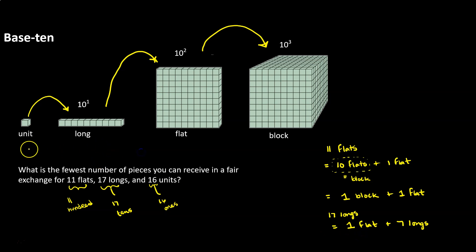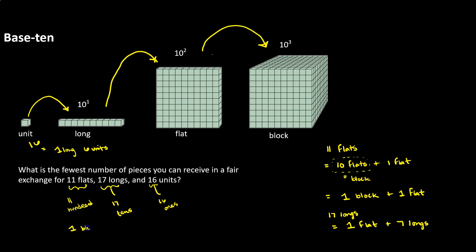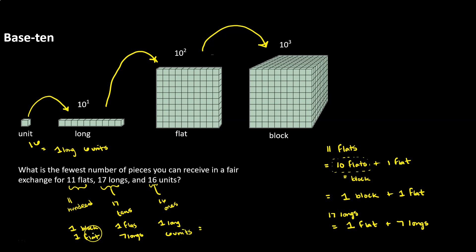Then we need to look at our units. We have 16 units, which we could replace with one long, and that would leave 6 units behind. So then looking at everything that we've exchanged — we took our 11 flats and split it into a block and a flat. We took our 17 longs and turned that into 1 flat and 7 longs. And then our 16 units turned into 1 long and 6 units. Then we want to combine those together. Notice that I have a couple flats that I can combine and a couple of longs that I can combine. And if those were enough to make a new grouping, I would do that.